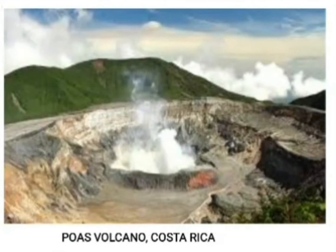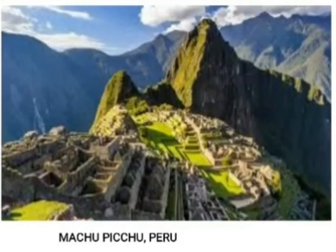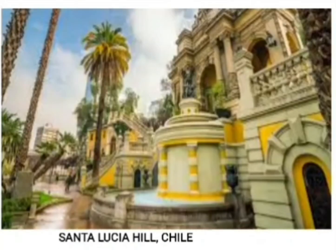The next one — you can see the Poás Volcano in Costa Rica. This is an active volcano in the world. You can also see Machu Picchu in Peru.